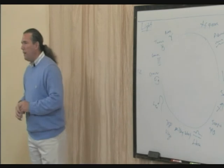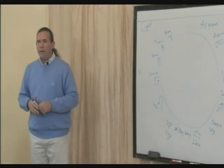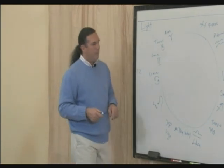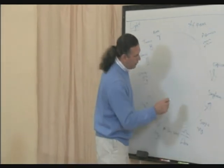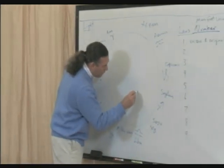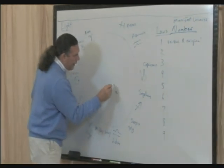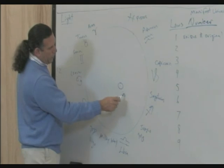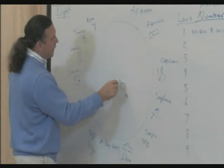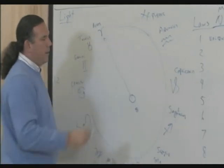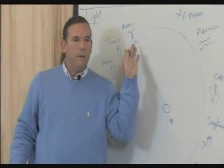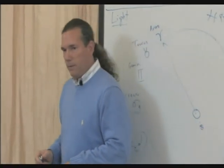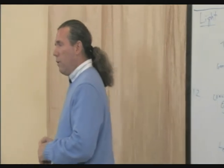Each person born here is born within a certain time, and when we look from Earth at the Sun, the person born during this time would say the Sun was in Aries.